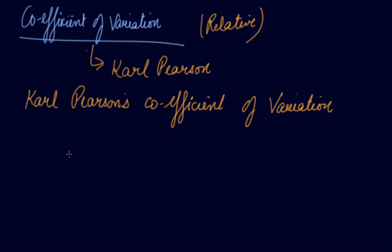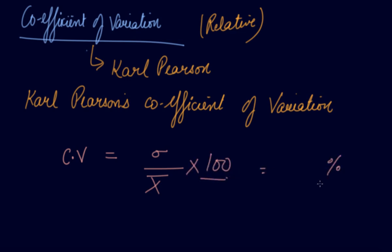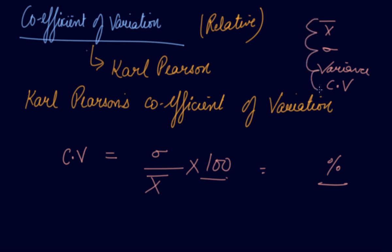The coefficient of variation is denoted by CV. CV equals standard deviation divided by mean, multiplied by 100. If a question asks you to find the coefficient of variation, you first find the mean, then calculate the standard deviation, then variance, and finally the coefficient of variation. All of these measures are related to each other.